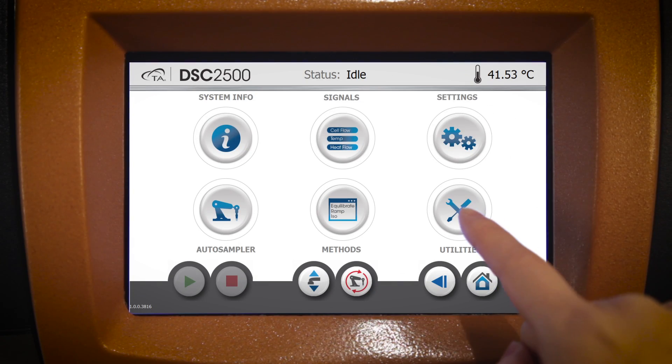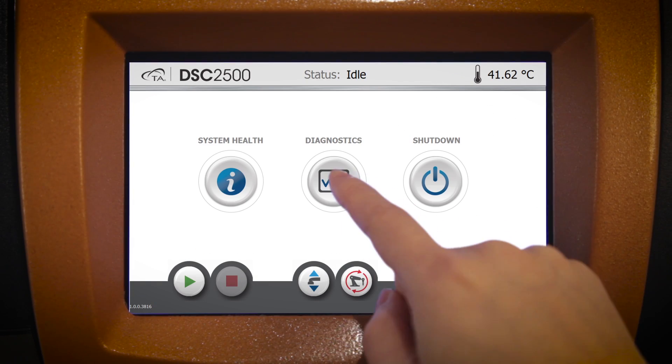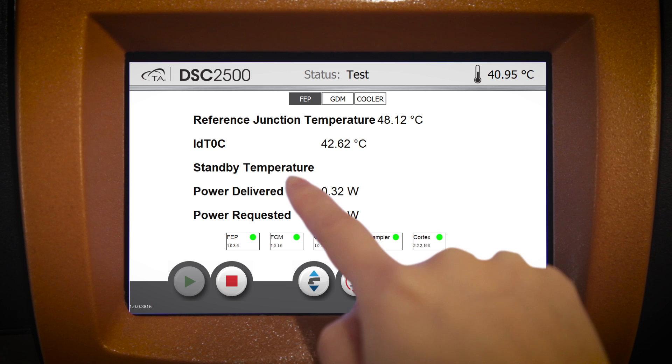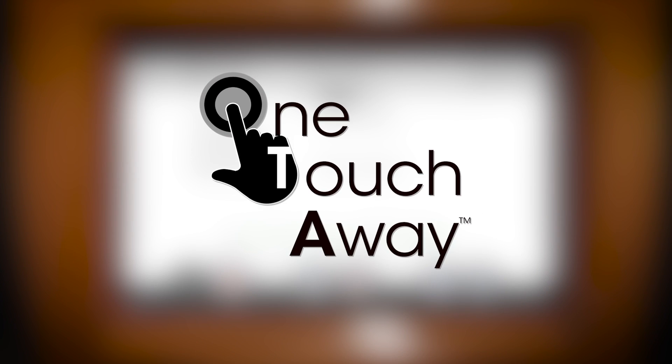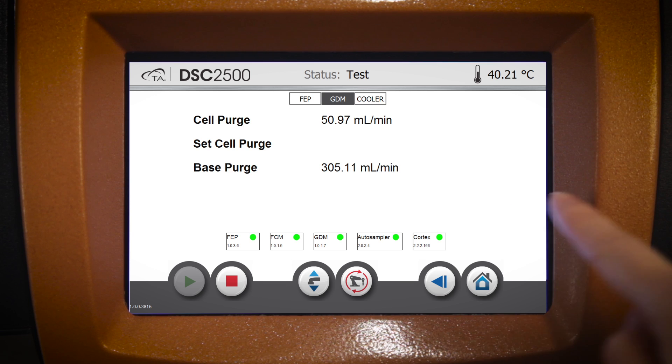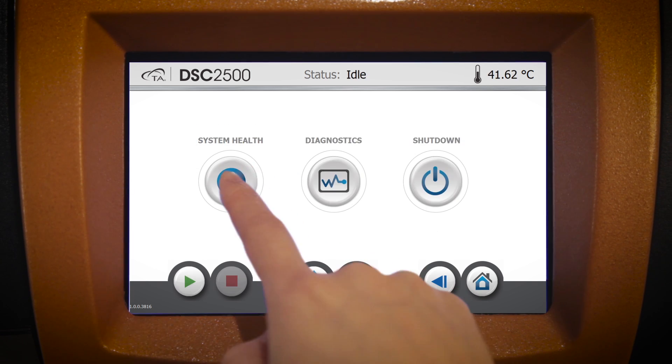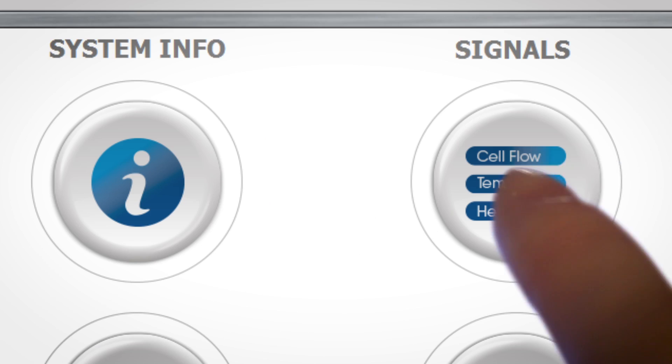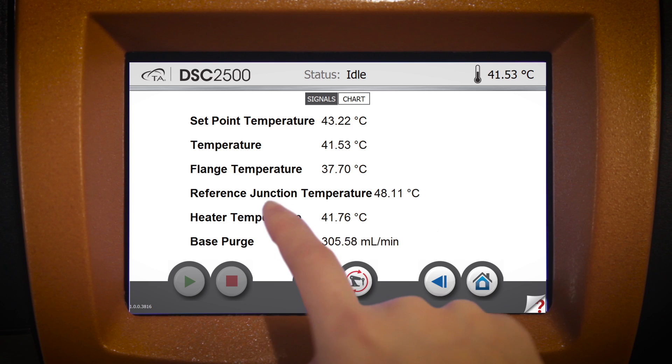An innovative new app-style interface, standard on all Discovery DSC instruments, includes one-touch-away functionality and our newest version of TRIOS. The new user interface makes operation easier than ever, providing an ergonomic design for easy viewing and generating great data.